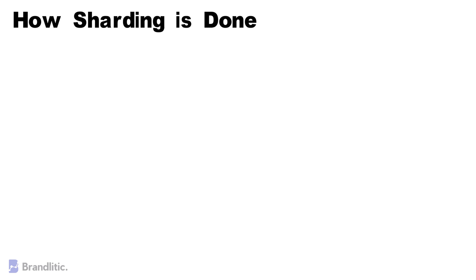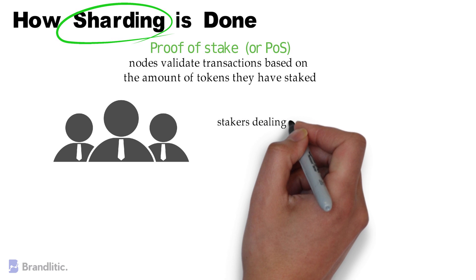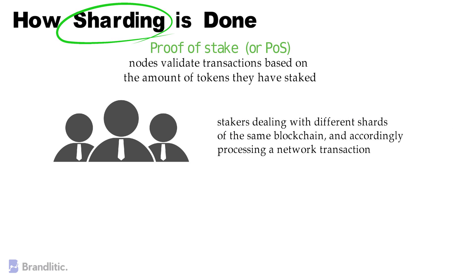I'll try to give you some context in terms of Proof-of-Stake and Proof-of-Work. Sharding is typically done on Proof-of-Stake networks, as opposed to Proof-of-Work or PoW. In the PoS consensus mechanism, nodes validate transactions based on the amount of tokens they have staked. Sharding would involve stakers dealing with different shards of the same blockchain and accordingly processing network transactions.